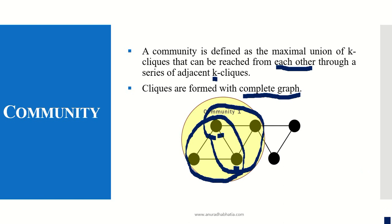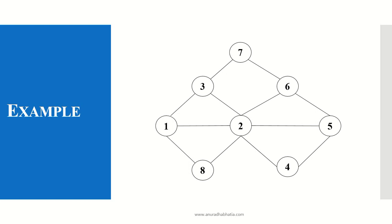Now that we are clear about what is a clique and community, let us solve an example. This is an example where the clique and community formation is shown. This is a complete graph which has 8 nodes connected as shown. Cliques and communities do not compulsorily need a directed graph but they need an undirected complete graph. For this example, we need to find out how many communities and how many cliques there are. We can form cliques with k equals 3. If k equals 3, a clique has 3 nodes; if k equals 4, it has 4 nodes.